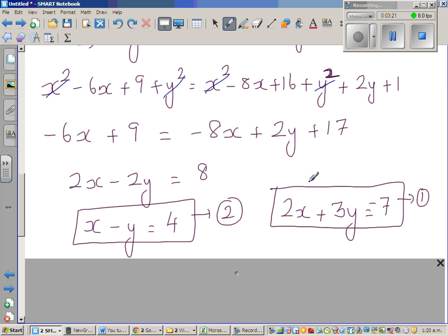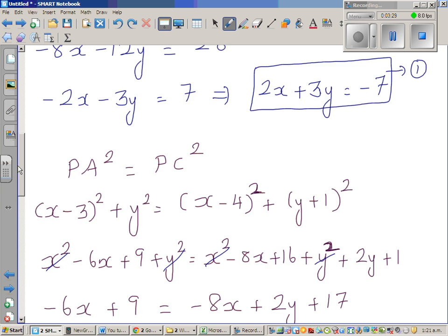So this simplifies to this. I want you to look at the steps. The steps are very clear. So this is equation 1: 2x + 3y = -7.